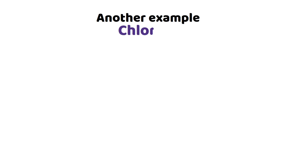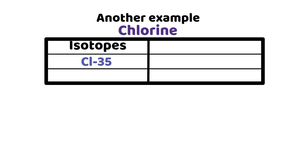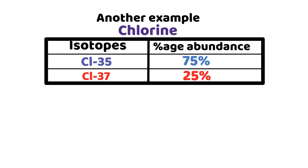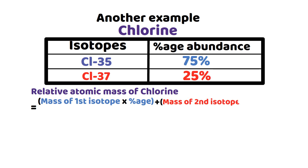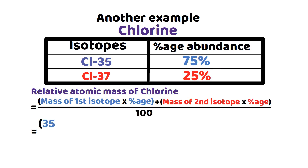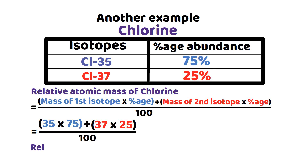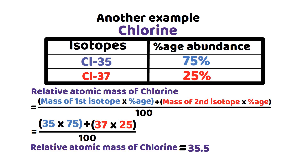For chlorine, which has two isotopes — chlorine-35 and chlorine-37 — 75% exists as chlorine-35 and 25% as chlorine-37. The relative atomic mass of chlorine equals (35×75 + 37×25) / 100 = 35.5, which is the value shown in the periodic table.